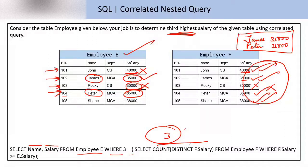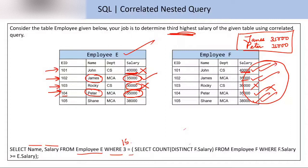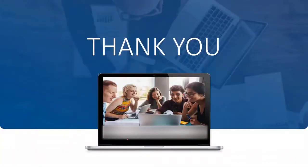If you have to select the second highest salary, put 2; for fourth highest salary, put 4; for 15th highest, put 15. This is the method by which you can use correlated query to find the Nth highest salary. Thank you so much.